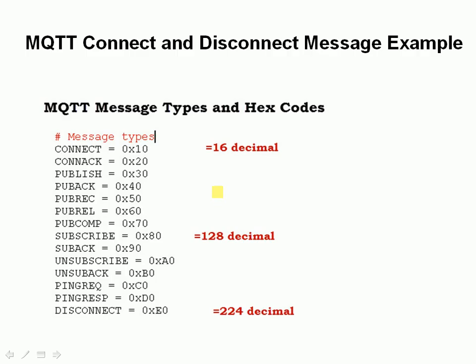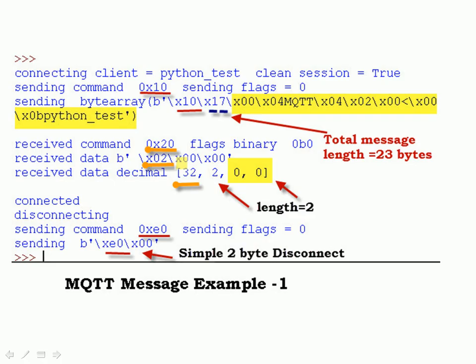Here's a list of the codes taken from the Python client code — you can see the connect and the connect acknowledge as hexadecimal 10 and hexadecimal 20, which correspond to decimal 16 and decimal 32.